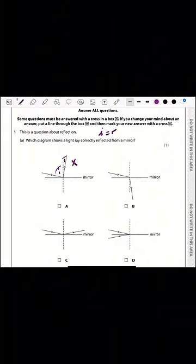So this diagram is not correct, diagram A. For diagram B, this one is the angle of incidence, but here the reflected ray went through the mirror and this is wrong as well.